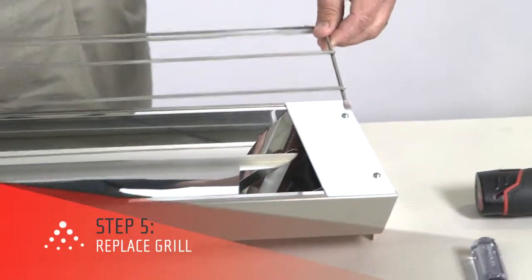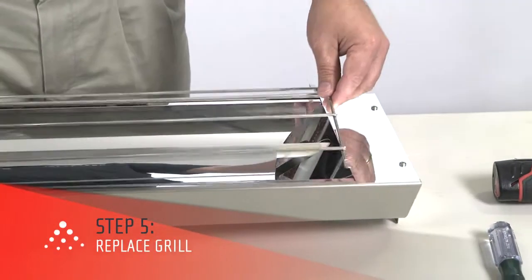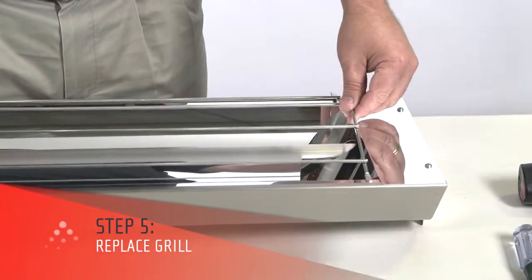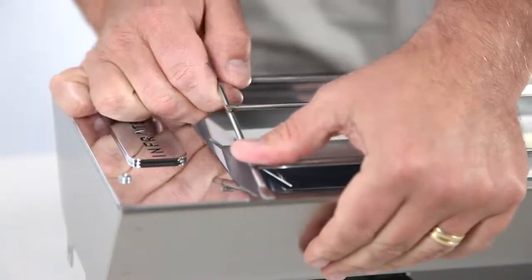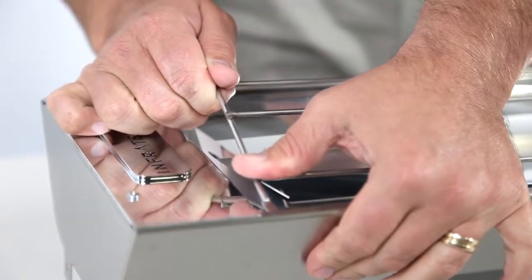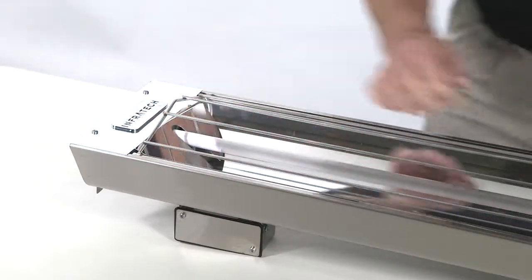You are now ready to replace the grill. Start by seating the grill between the reflector and heater housing on one side. Next, flex up the middle of the grill in order to seat the tabs into the opposite side of the heater.